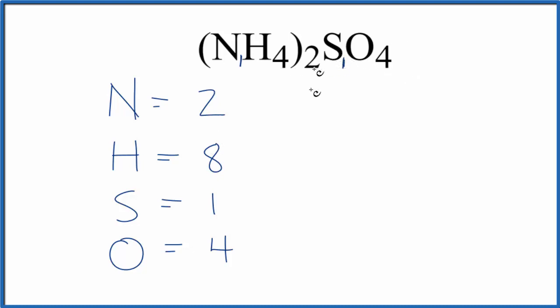Sometimes you'll be asked to find the number of atoms, for example nitrogen atoms, in 1 mole of ammonium sulfate. To do that, you multiply the number of atoms of nitrogen times Avogadro's number. So 2 times Avogadro's number, that'll give us the number of nitrogen atoms in 1 mole of NH42SO4.